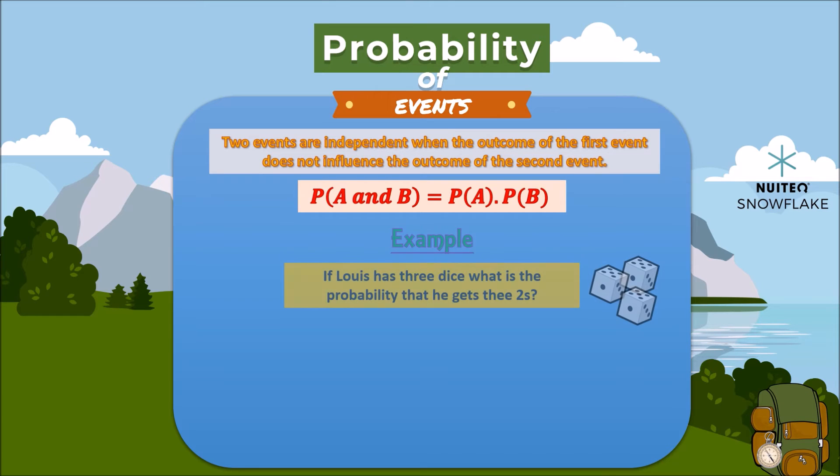If Louis has 3 dice, what is the probability that he gets 3 2s? The probability of getting a 2 on 1 die is 1/6, so the probability of getting 3 2s is represented as probability of 2 and 2 and 2, and we will need to multiply 1/6 three times. And this is the result. Cool right?